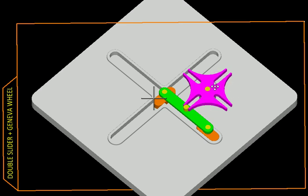The purple flower-like link is not a part of this mechanism. It is just there to make it more interesting. It is called a Geneva wheel and it gives us intermittent motion. Let us see the animation now.